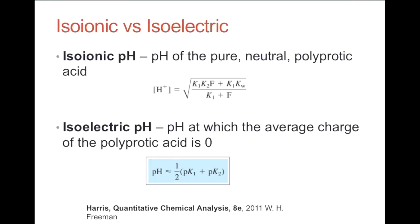A couple of definitions: Isoionic pH is the pH of the pure neutral polyprotic acid — we use the equation we've seen before to find that pH. The isoelectric pH is the pH at which the average charge of the polyprotic acid is zero, and we use a specific equation for that as well.